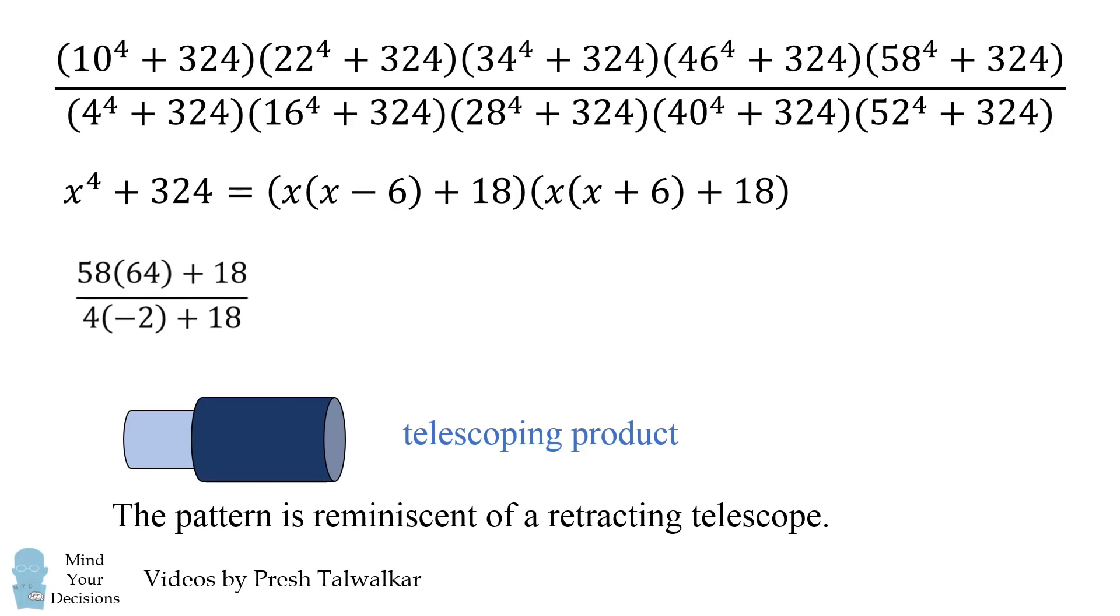So now we just need to simplify this fraction. Well, that's not too hard. The numerator is equal to 3730, and the denominator is equal to 10. We divide and we get the answer of 373.